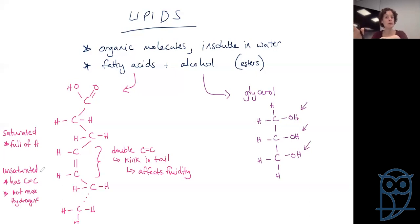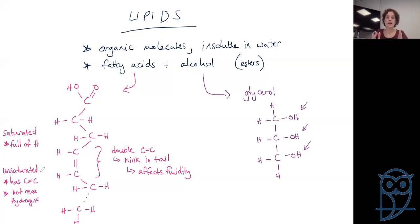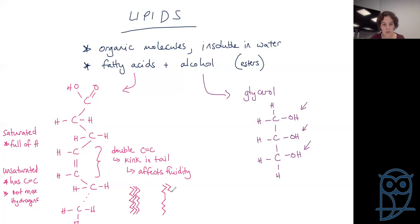Unsaturation has two implications. First, we have less carbon-hydrogen bonds, so we have less energy yield per unit mass. However, it also affects fluidity. When you have double bonds, you get a kink in the tail. If you had beautifully saturated tails, they can lie close to each other. But if we put kinks in those tails, the kinks aren't necessarily going to be in the same place, so they don't lie close to each other — and when molecules don't lie close together, they are more fluid. So when you increase unsaturation, you increase fluidity.